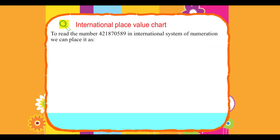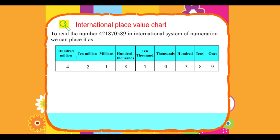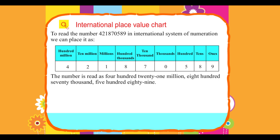To read the number 421,870,589 in the International System of Numeration, we place each digit into its corresponding column: Ones, Tens, Hundreds, Thousands, Ten Thousands, Hundred Thousands, Millions, Ten Millions, and Hundred Millions. The number is read as four hundred twenty-one million, eight hundred seventy thousand, five hundred eighty-nine.